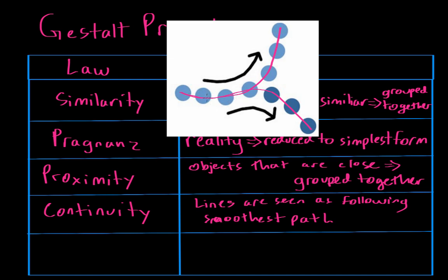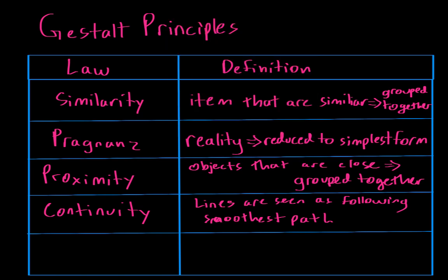Another thing your brain does when looking at this image is it takes these circles and organizes them as one entity. It puts them together and notices a pattern — that these circles are forming a continuous line — and you group those circles into one mental category, separate from the others that are in their own category. That's what the law of continuity basically says.